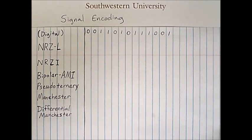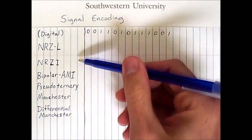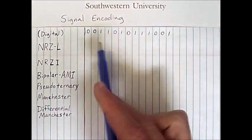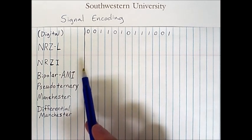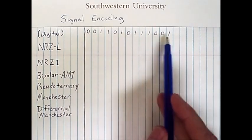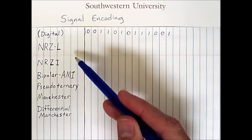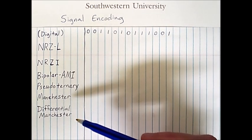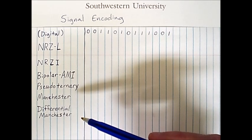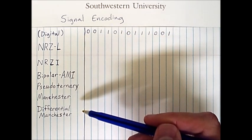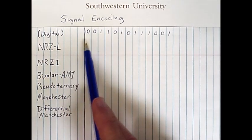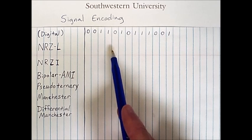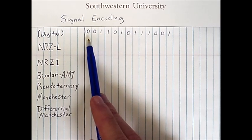This video is about signal encoding, specifically digital signal encoding. I've listed several encoding methods on the left, and we have a sequence of bits up on top. I'm going to show you how to encode this bit sequence using each of these digital signal encoding methods. The means we have to encode these signals is via different voltage levels, and for each encoding method I will draw a line indicating how the voltage level alternates as the encoded bit changes.